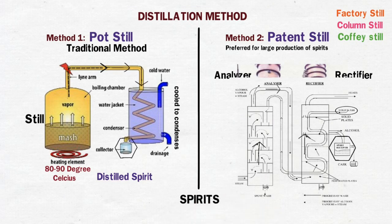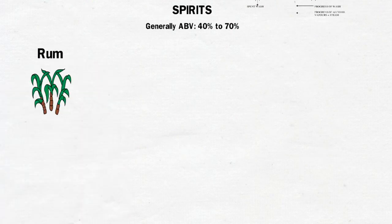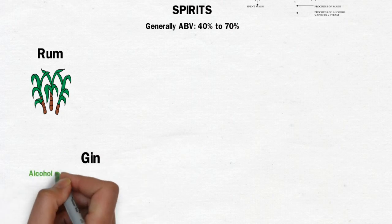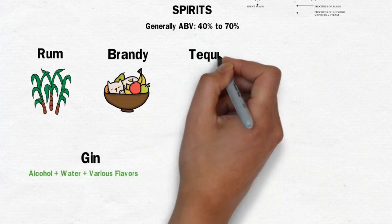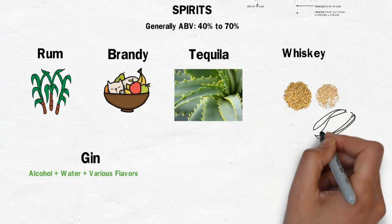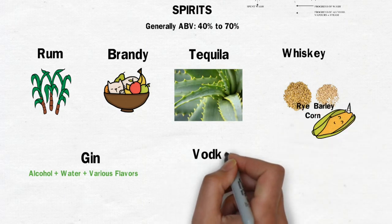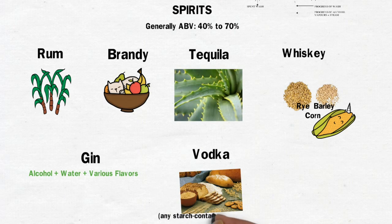Distilled spirits contain more alcohol than any other portable alcoholic beverage, normally ranging from 40 to 70 percent alcohol by volume. Distilled beverages include: rum, made from sugarcane juice or molasses; gin, a combination of alcohol, water, and various flavors; brandy, from fruit juices; tequila, from the sap of the blue agave plant; whiskey, from cereals such as corn, rye, and barley; and vodka, obtained from grains or any starch-containing raw material such as potatoes, sugar beet, or peas mixed with cereals.